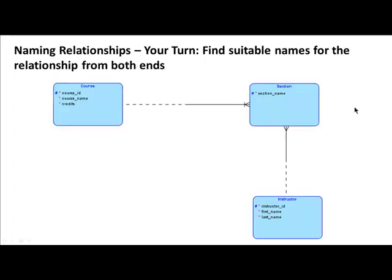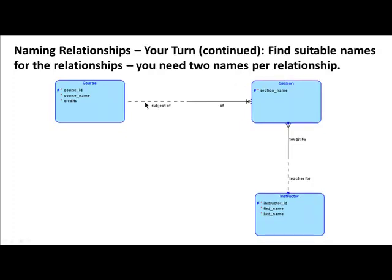Another example: try to create the relationship names for a new diagram. One solution: 'each course might be the subject of one or many sections. Each section must be of one course. Each section must be taught by one instructor. Each instructor might be the teacher for one or many sections. Each section must be attended by many students.' You can name the relationships in this way.